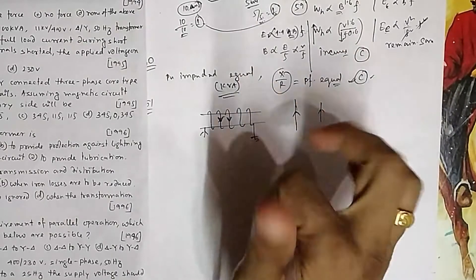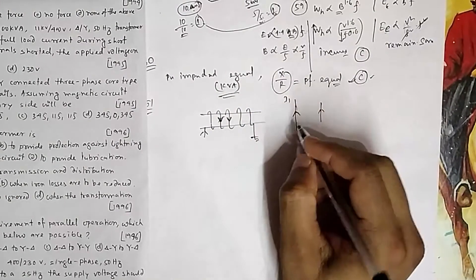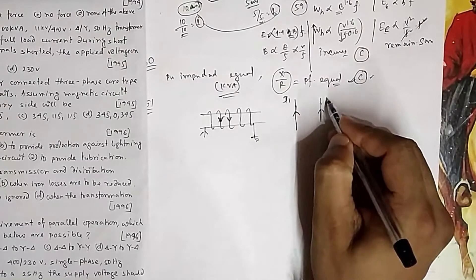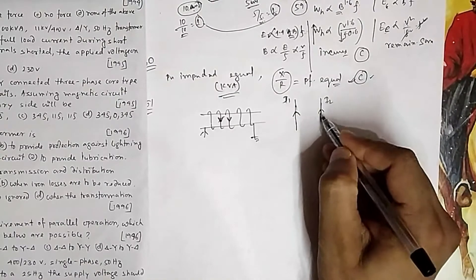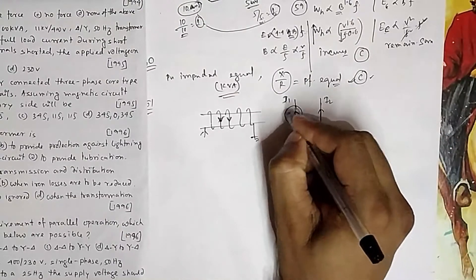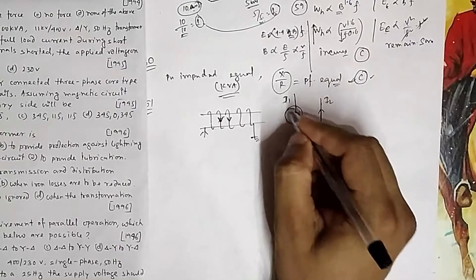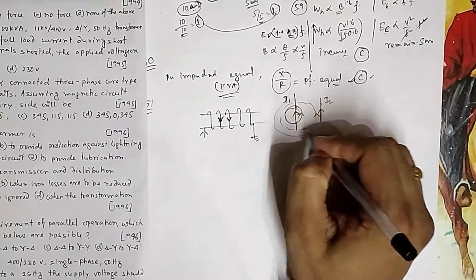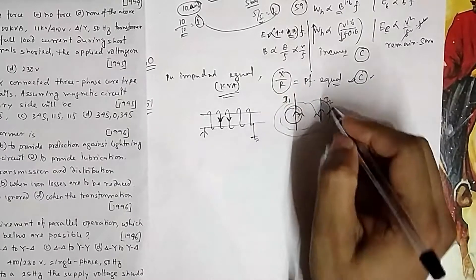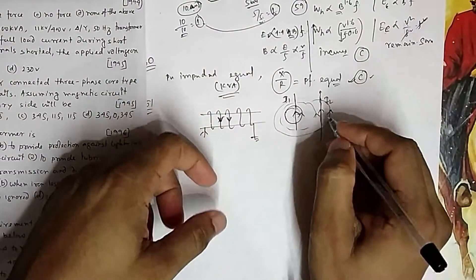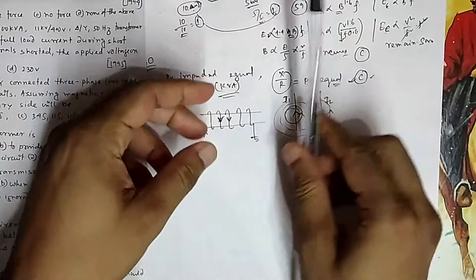Consider the magnetic field due to current i1. Due to this current i1, there will be a magnetic field, and because the adjacent conductor is carrying current and is placed in that magnetic field, it will experience a force. Let's determine the direction of that force based on the current and the resulting magnetic field.